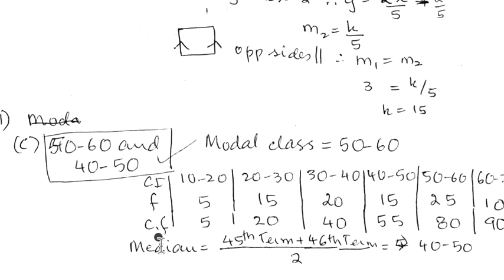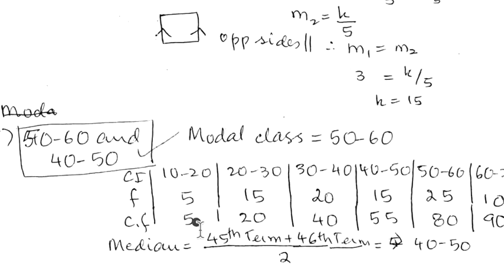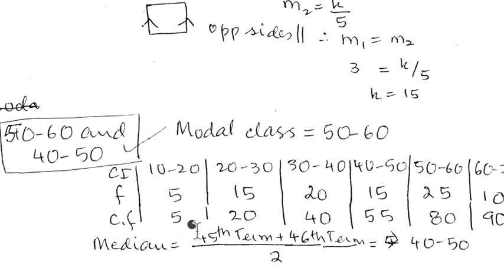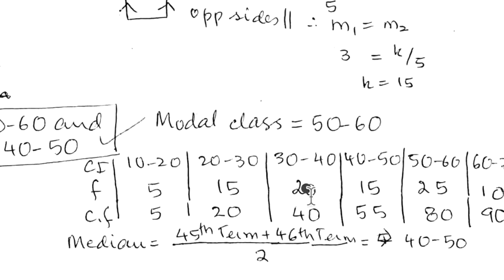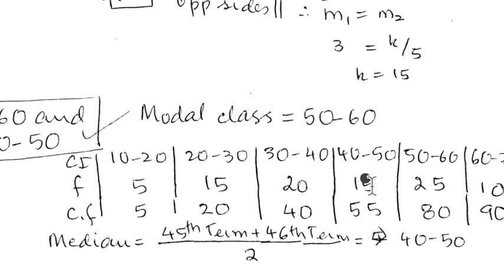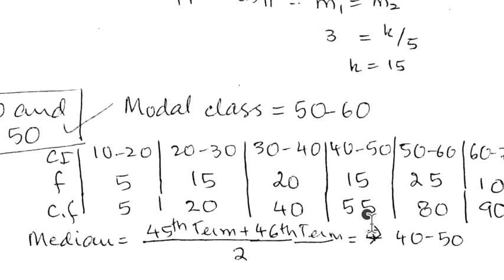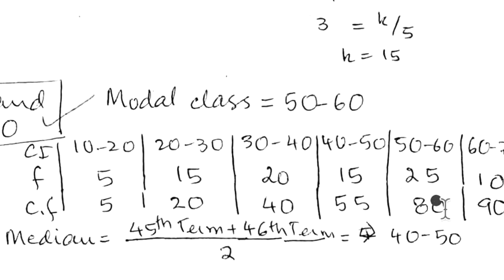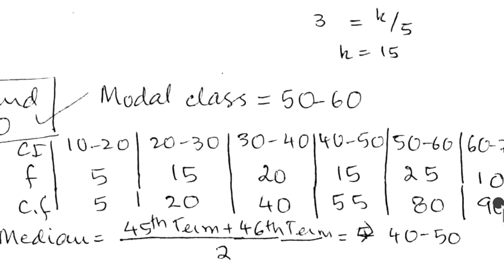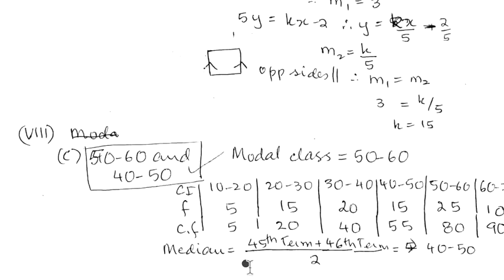For median we need cumulative frequency. So for the first class interval this will be 5. Here it will be 5 plus 15 that is 20. Then 20 plus 20 that is 40. 40 plus 15 that is 55. 55 plus 25 is 80 and 80 plus 10 is 90. Now 90 is even. So your median will be 45th term plus 46th term upon 2. How do we get that? Remember the formula is n upon 2th term plus n upon 2 plus 1th term the whole thing upon 2.